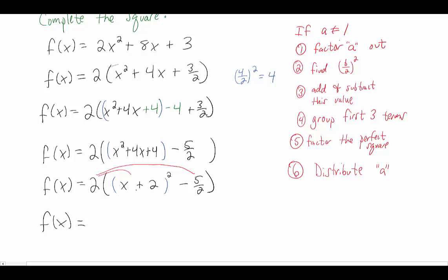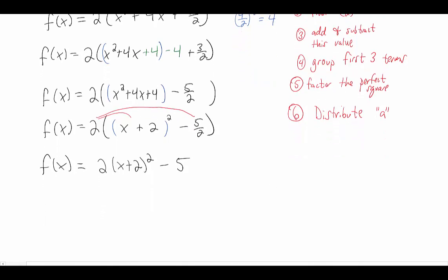If I multiply 2 by this first term, the x plus 2 quantity squared, it just looks like this. And if I multiply 2 by the second term in the parentheses, this 5 halves, 2 times 5 halves is just 5. And now this is the form that we want.